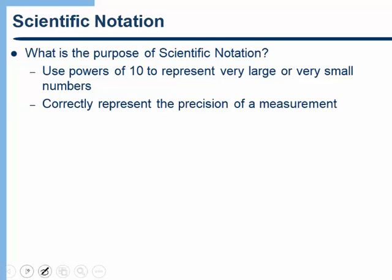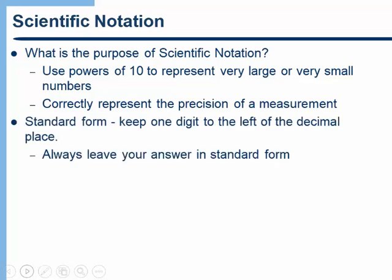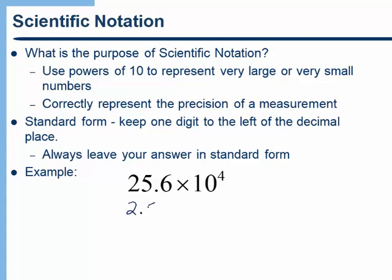When we use scientific notation in general we want to use what's called standard form. And that simply means to keep one digit to the left of the decimal place. So for example here's a number written in scientific notation but that's not in standard form. To write that number in standard form I want to write it as 2.56 times 10 to the fifth. So in other words I should only have one digit to the left of the decimal place.